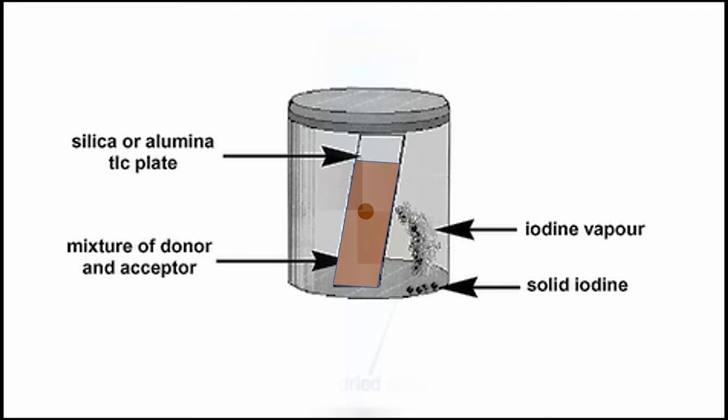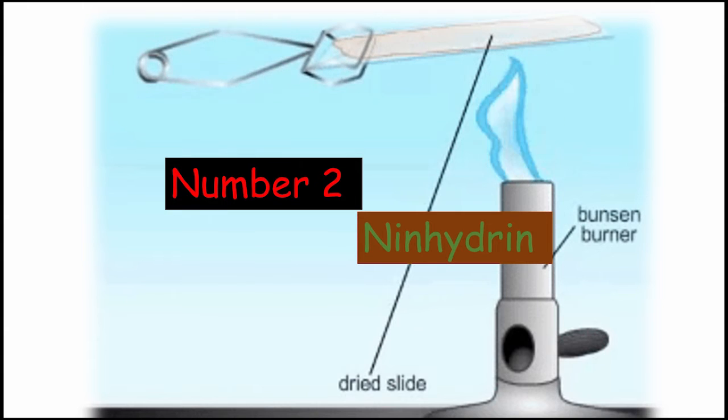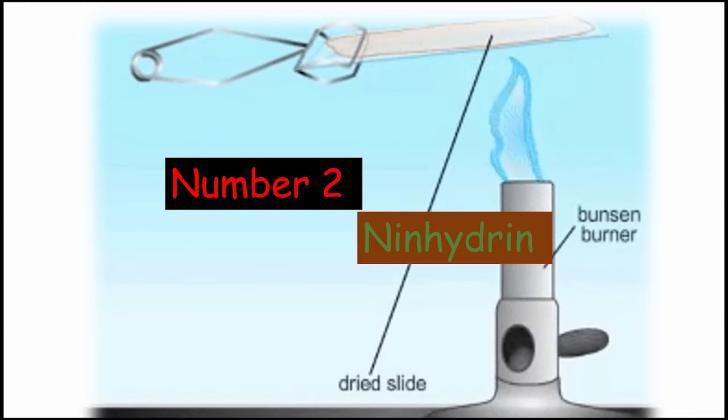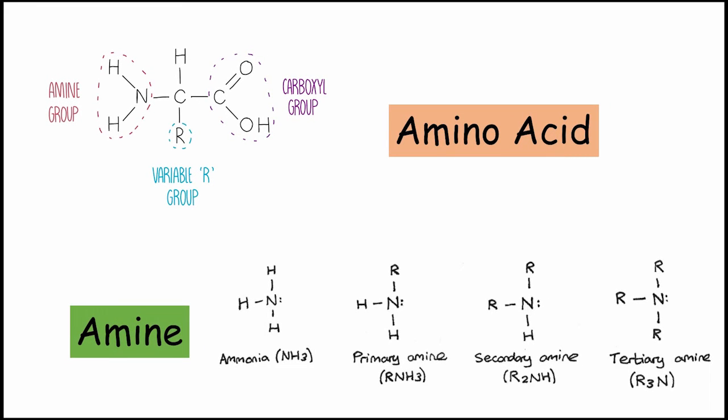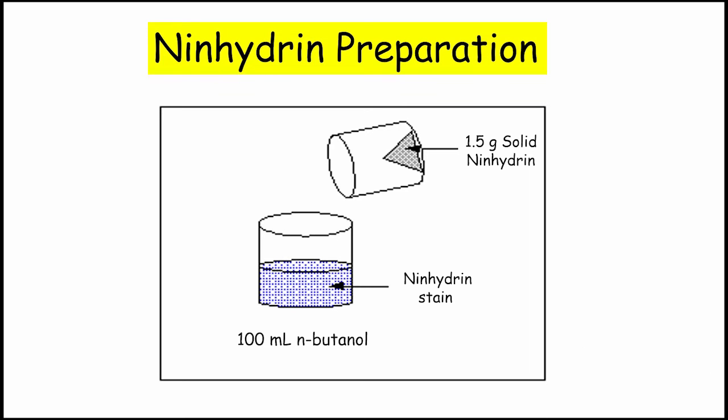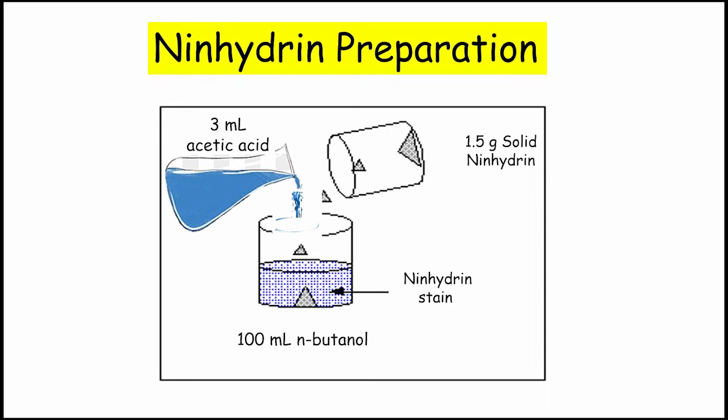Moving on to another important staining agent that is ninhydrin. It is excellent for detecting amino acids and amine groups. If your product is having amine or amino acid group, then dip your TLC in ninhydrin. How to prepare ninhydrin? Just simply dissolve 1.5 gram ninhydrin compound in 100 ml of n-butanol and then add 3 ml acetic acid. Shake it well. That's it.